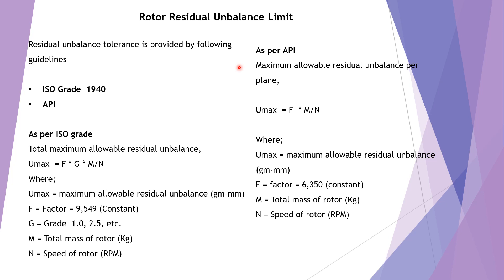As per API guidelines, the maximum allowable residual unbalance per plane is: U_max equals F × M divided by N, where U_max is maximum allowable residual unbalance in gram·mm, F is the constant factor 6350, M is total mass of rotor in kg, and N is speed of rotor in rpm.